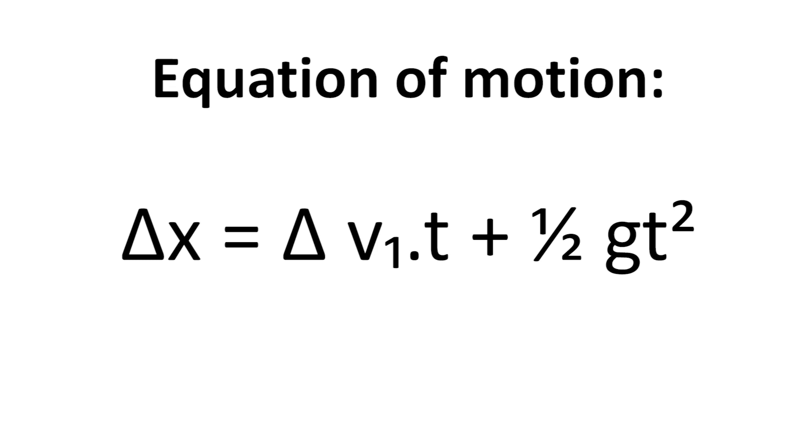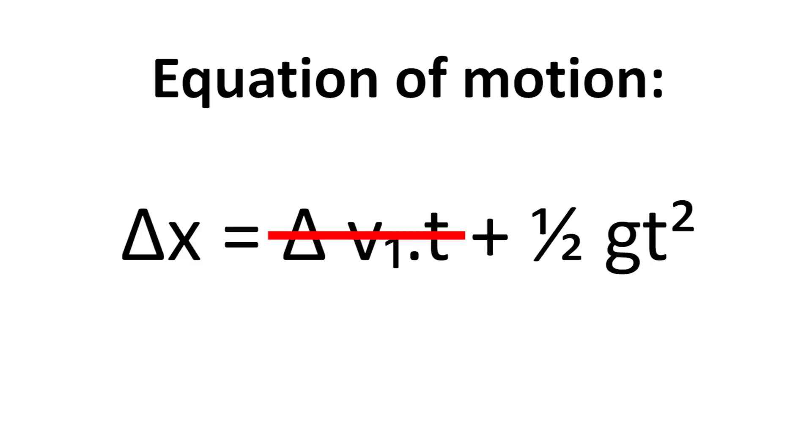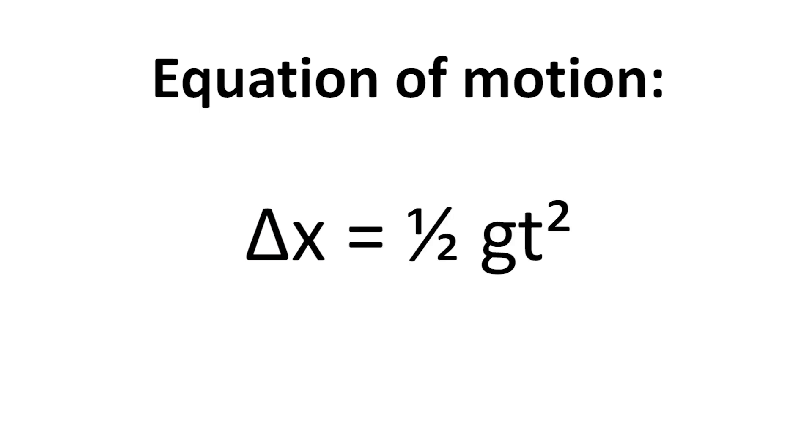Using the equation of motion, delta x equals v1 t plus a half g t squared, it is possible to calculate the value of g. Remember that v1, which is the initial velocity, is zero, and any number multiplied by zero stays as zero. So the v1 t will fall away and your equation will be delta x equals a half g t squared.